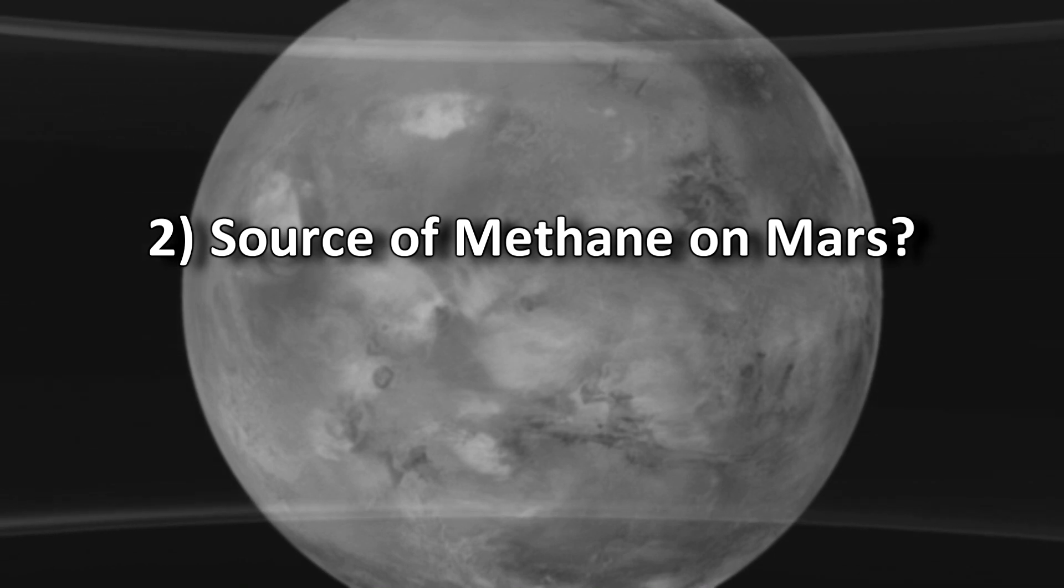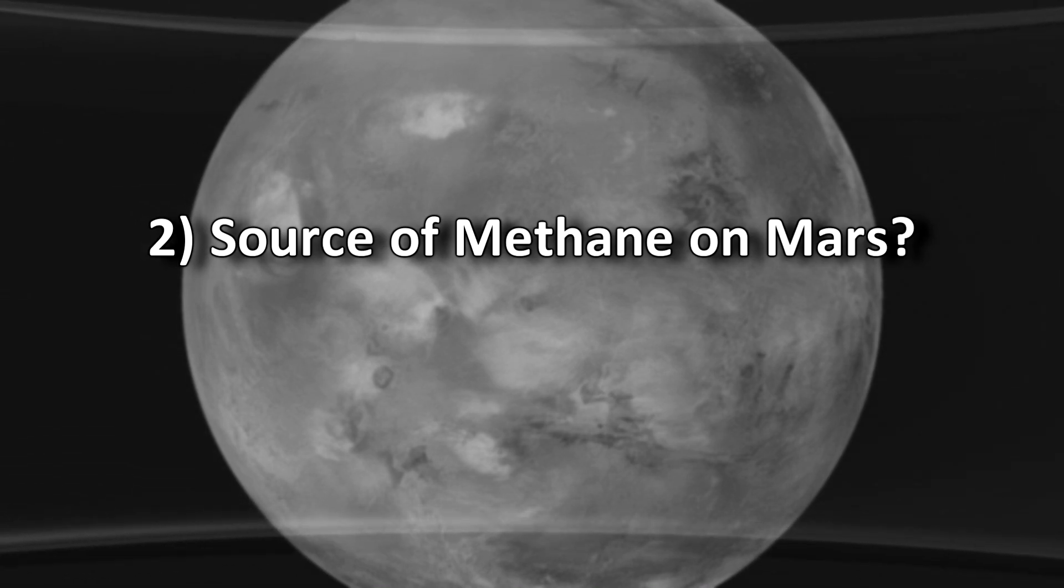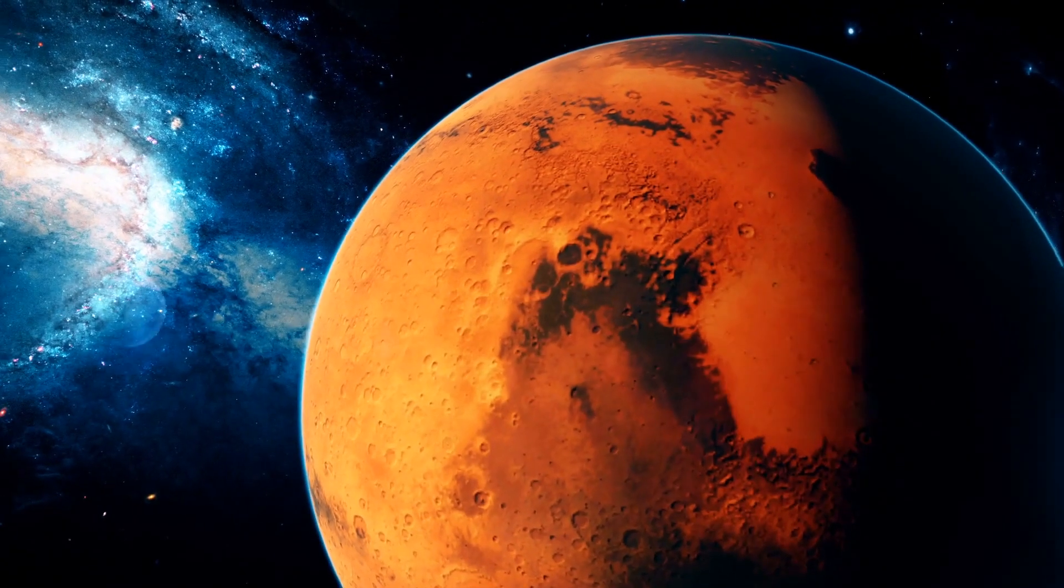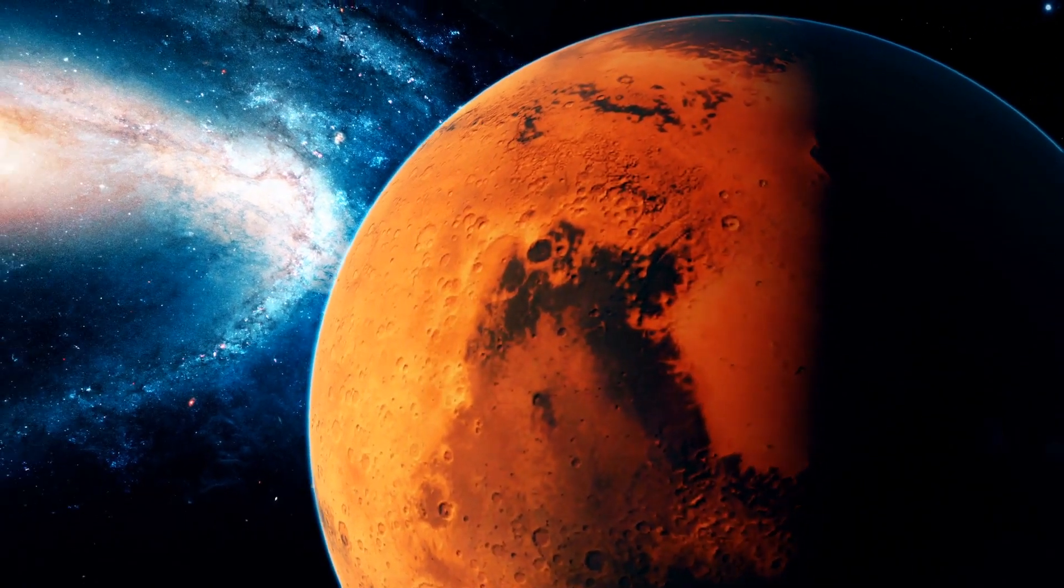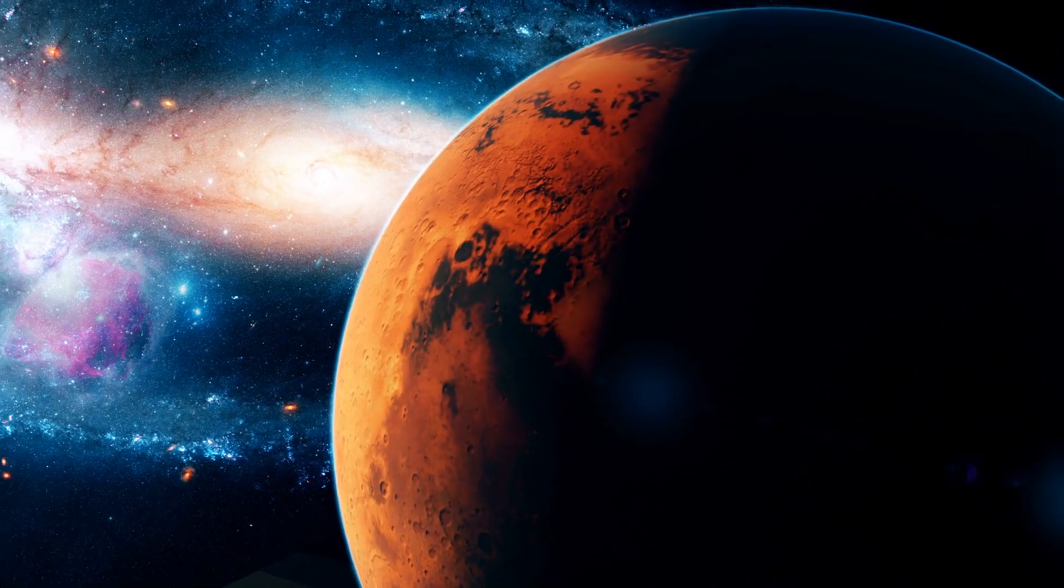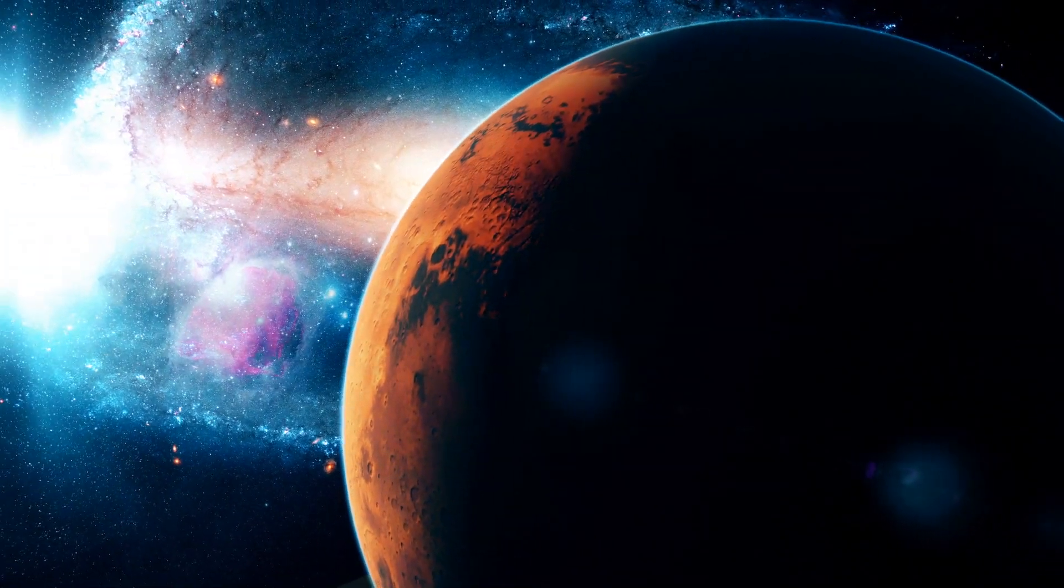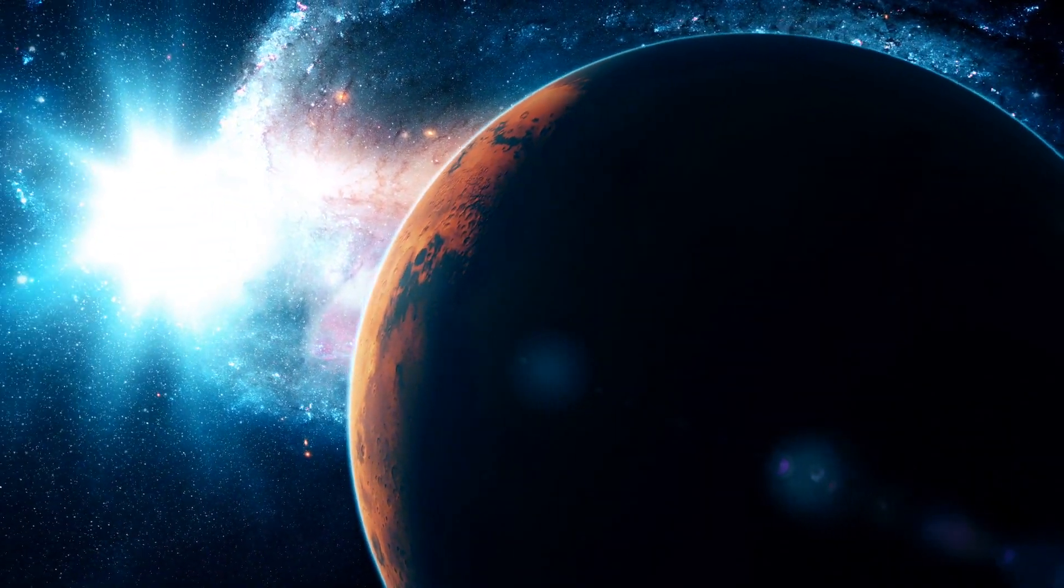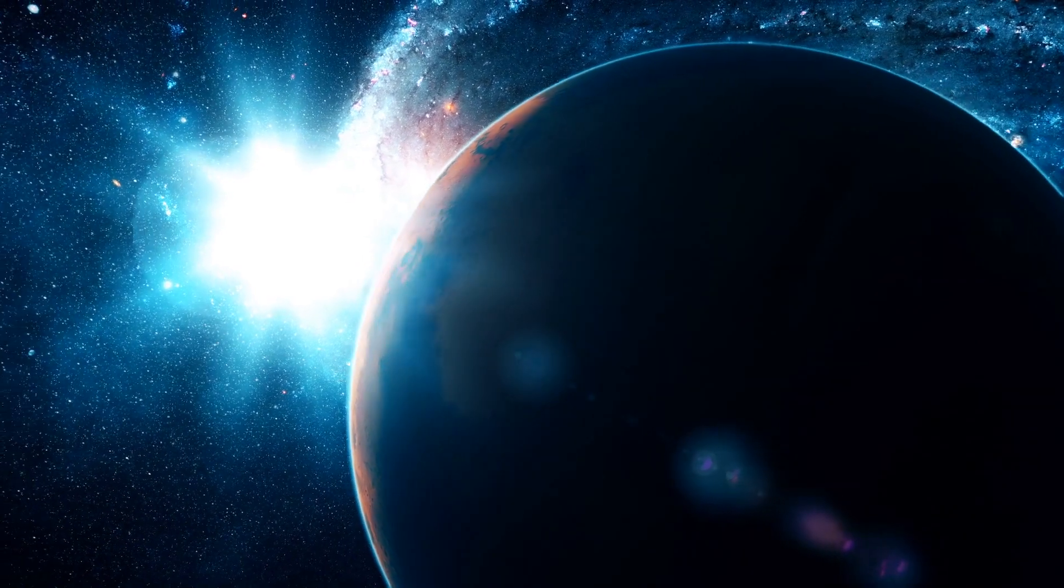Source of Methane on Mars? Methane, a simple organic molecule, was found in Martian atmosphere by scientists. On Earth, methane is produced by life forms such as cattle digesting grass. But we don't have cattle on Mars, do we?